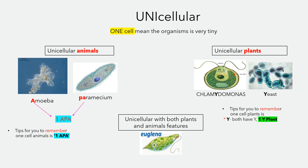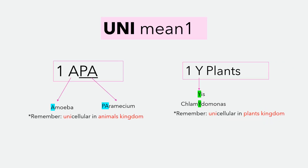Euglena is special. Euglena has the characteristics of both plants and animals. Euglena can make its own food like a plant, but it can also move like an animal. Remember, unicellular in the animal kingdom is 'one APA,' and unicellular in the plant kingdom is 'one white plant.'